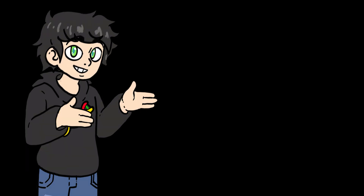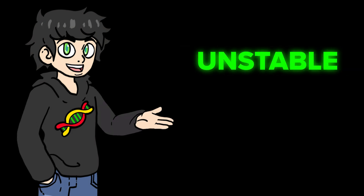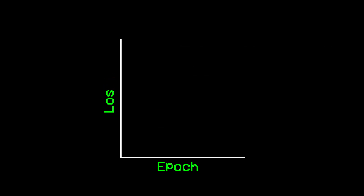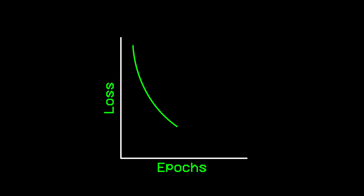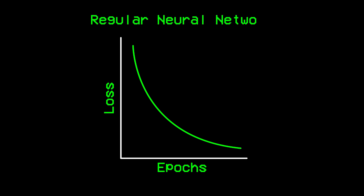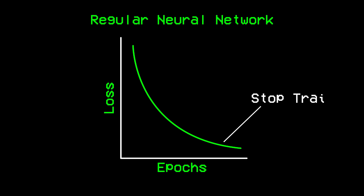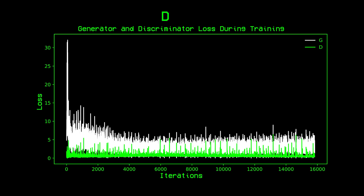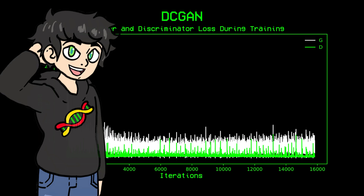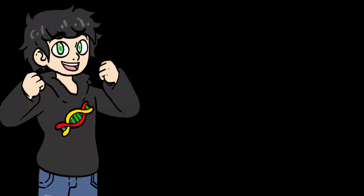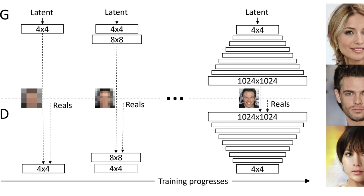The faces also suck because training GANs is notoriously complicated. They are super sensitive to parameters and very unstable. For reference, this is the typical loss curve you get when training a regular neural network — it's fairly easy to interpret and you know when to stop training. This is what I got for the GAN I just trained. What the hell am I supposed to do with this? To solve this, let's move on to a better model.